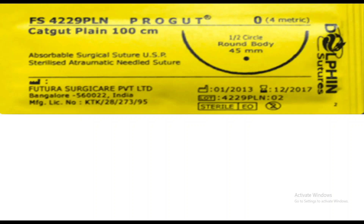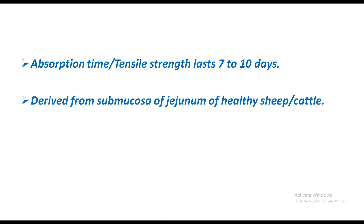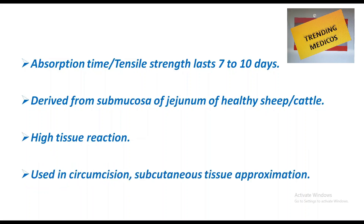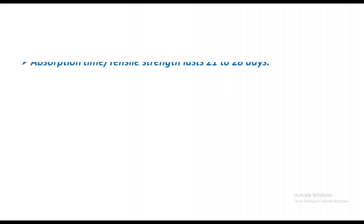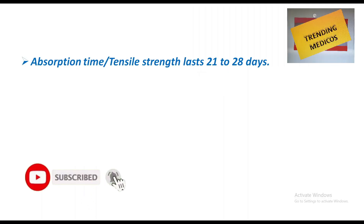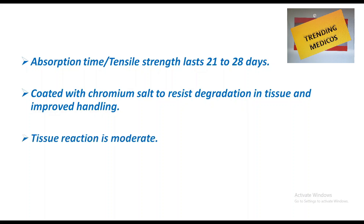Plain catgut is yellow in color, 100 cm in length, with a half-circle needle with a round body of 4.5 mm. Its tensile strength lasts 7 to 10 days. It is derived from the submucosa of the jejunum of healthy sheep or cattle. It has high tissue reaction and is used in circumcision and subcutaneous tissue approximation.